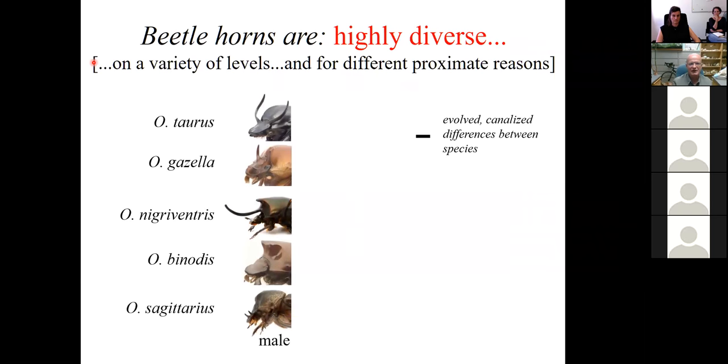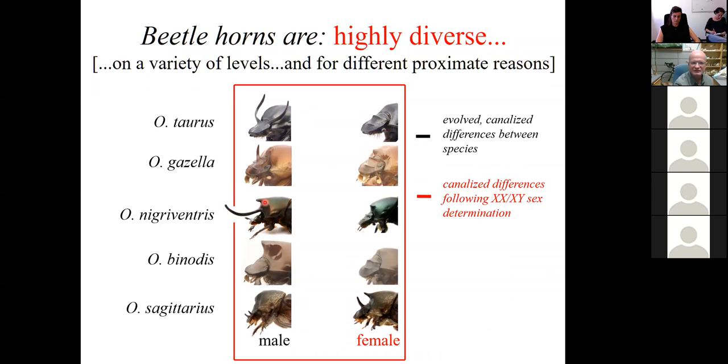Beetle horns are also extraordinarily diverse on a variety of levels. What I'm showing you here are the large male phenotypes of five species that we maintain in continuous culture. They differ in the number of horns, the shape of horns, the exact location of horns. You can look at this diversity as a reflection of evolved, canalized differences between species. In the next column, I'm showing you the corresponding females. And you can see that for the most part, with the exception of this species, they're all essentially hornless, giving rise to large or small sexual dimorphisms.